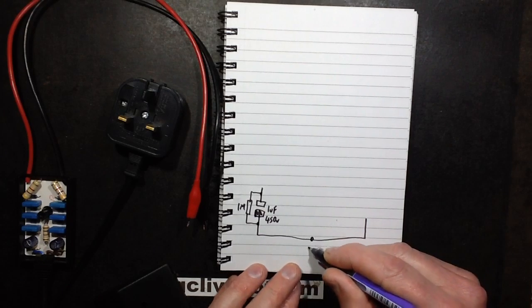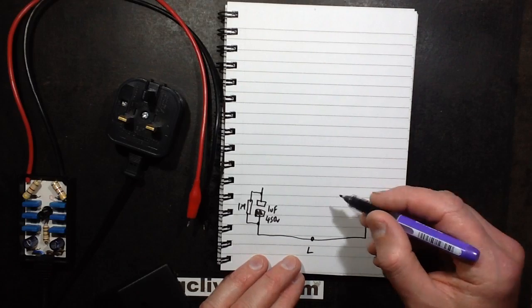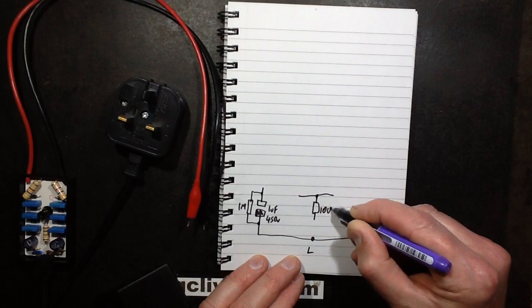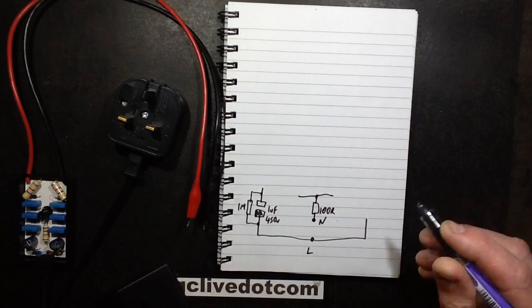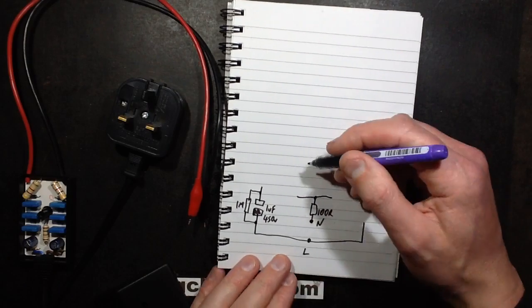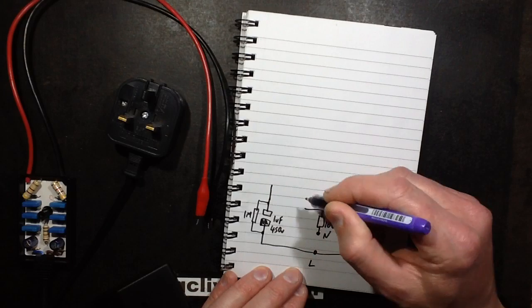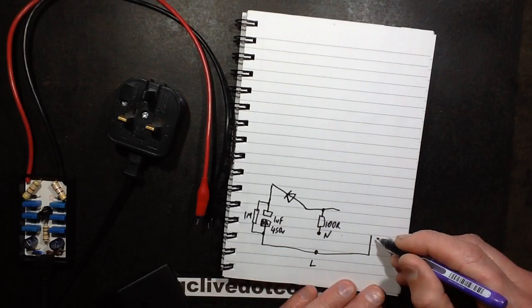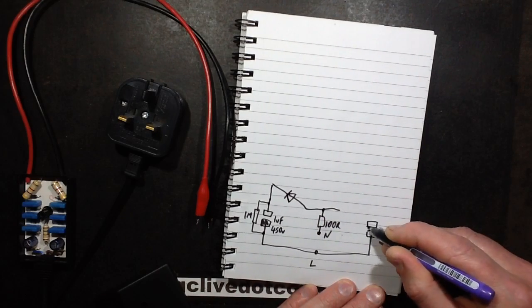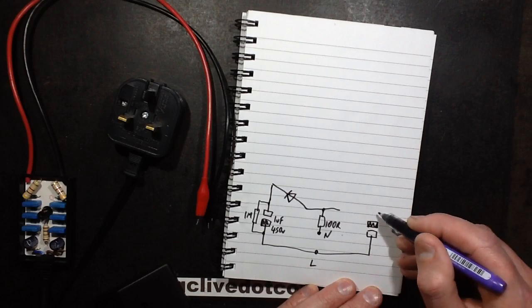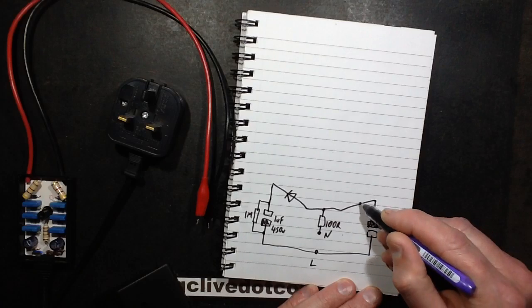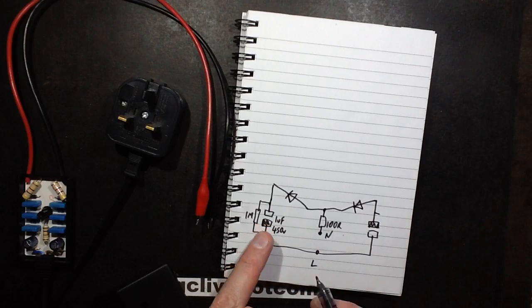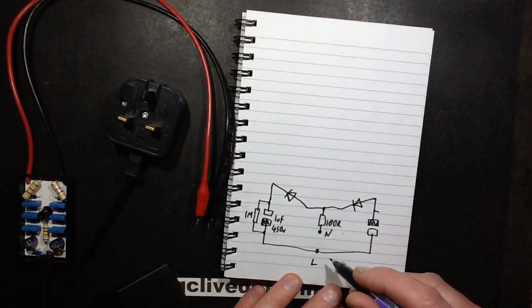So this is live and neutral. Neutral goes through a 100 ohm resistor just to limit inrush current. I'll draw one side first. Let me think and try and remember here. A diode goes up like that. On the other side we've got the opposite polarity so the diode actually points down in the opposite direction.